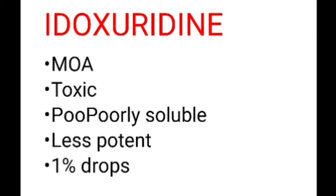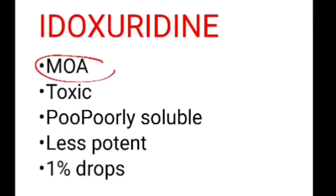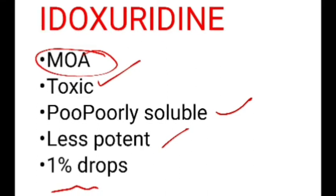Idoxuridine — its mechanism of action is that it inhibits DNA polymerase, incorporates into the viral RNA, thereby inhibits protein synthesis and halts viral replication. However, it is very toxic to even the host epithelial cells, poorly soluble, and less potent compared to other antivirals. It is used as 1% drops, 1-hourly in the daytime and 1-2 hourly at nighttime.